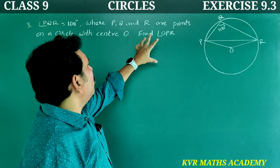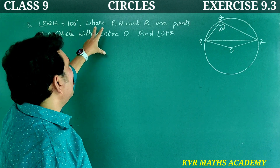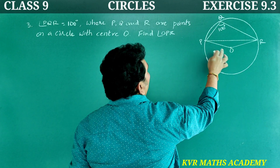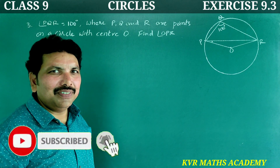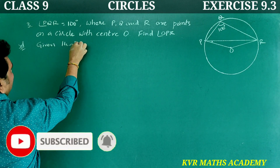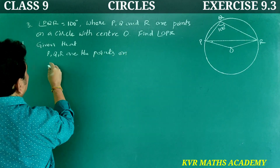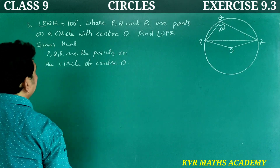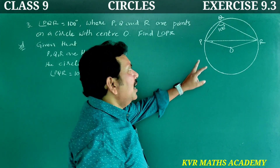This is the third question: angle PQR is equal to 100 degrees, where P, Q, R are points on a circle with center O. Find angle OPR. Given that PQR are points on the circle with center O, and angle PQR is equal to 100 degrees.